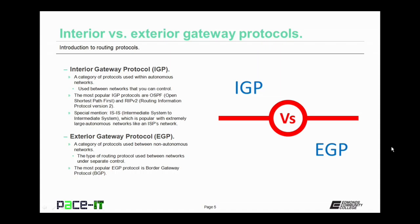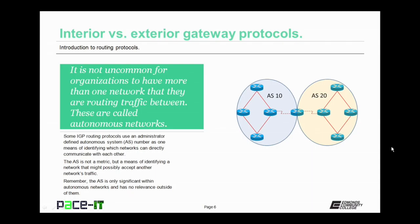Exterior gateway protocols, on the other hand, are a category of protocols used between non-autonomous networks — EGPs are used between networks that are controlled by different organizations or entities. The most popular EGP protocol is Border Gateway Protocol. It's not uncommon for organizations to have more than one network that they are routing traffic between; these are called autonomous networks. Some IGP routing protocols use an administrator-defined autonomous system number, or AS number, as one means of identifying which networks can directly communicate with each other. The AS number is not a metric, but a means of identifying a network that might possibly accept another network's traffic, and it is only significant within autonomous networks.